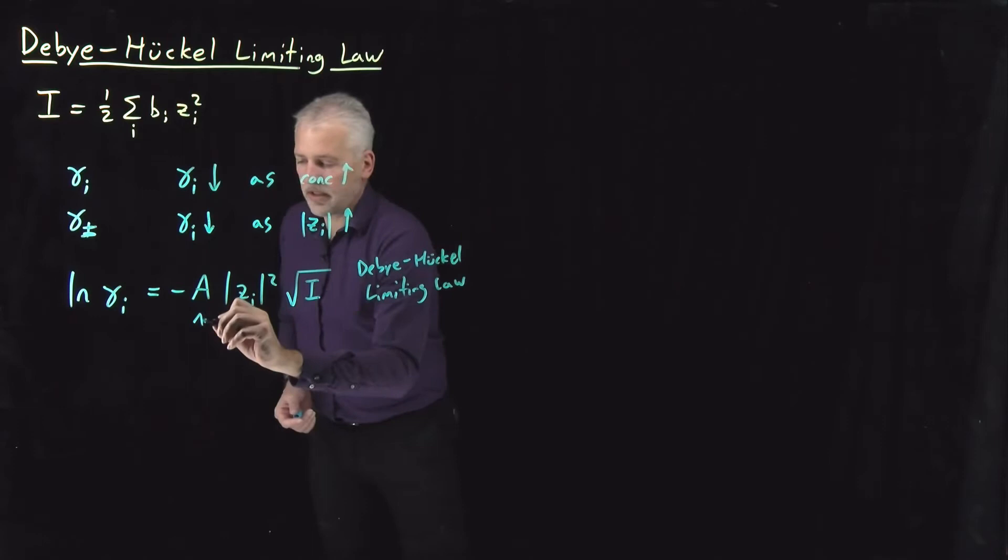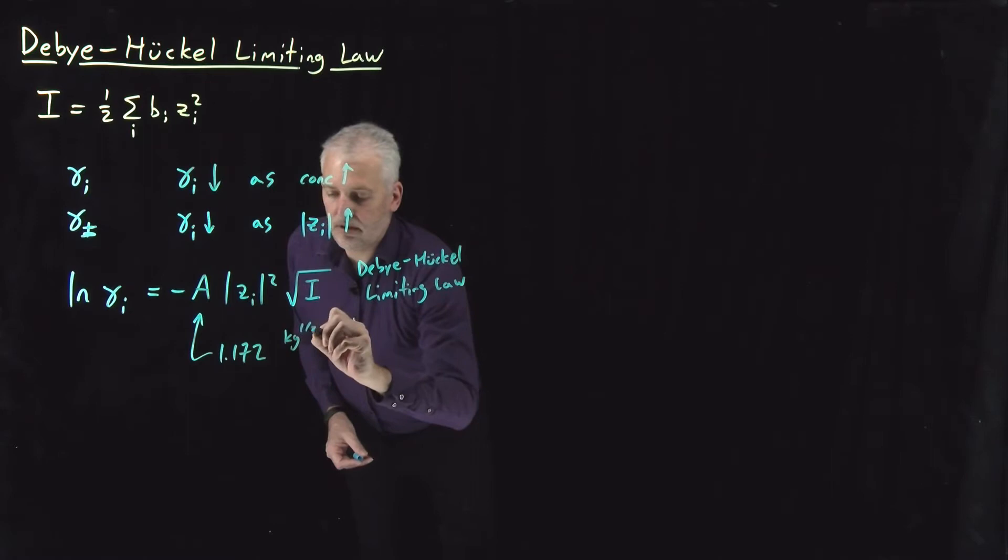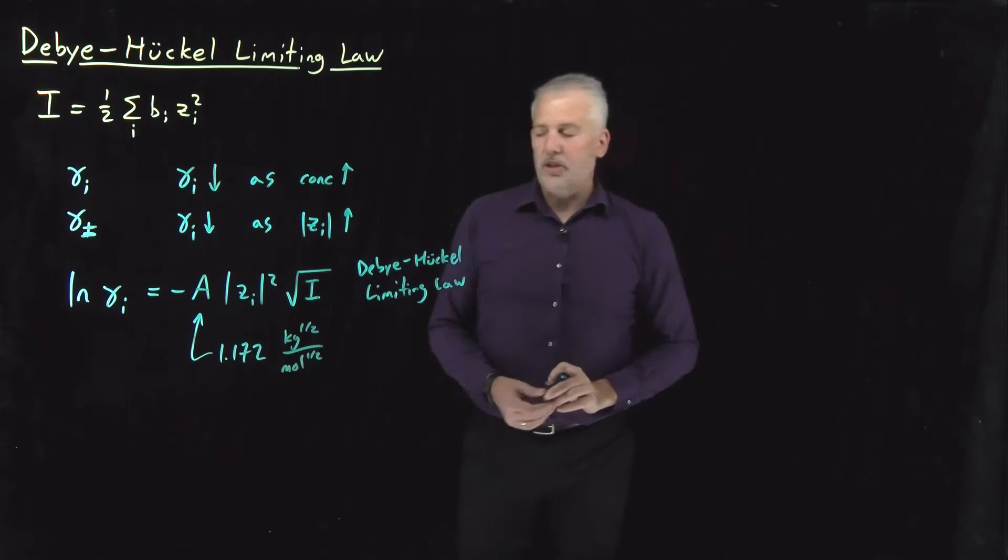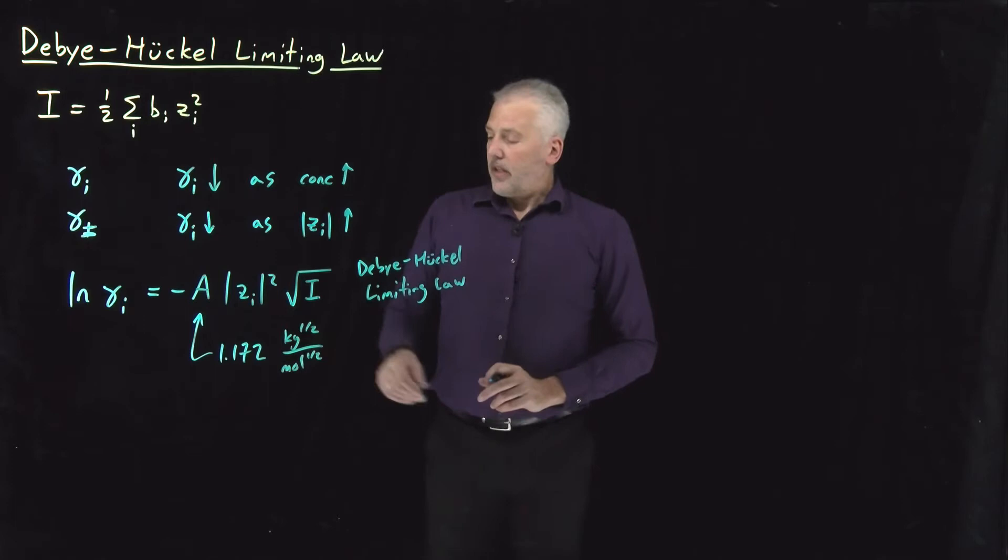There's a constant in this expression. This constant, let me give you a value for that, has a value of 1.172 in units of square root of kilograms over square root of moles. That looks like an unusual unit, but that turns out to be the correct unit. That's the unit we need in order to cancel the units of molality of the ionic strength, which are inside this square root sign.